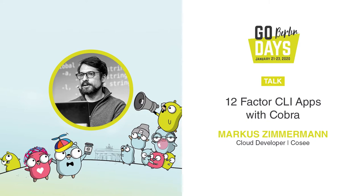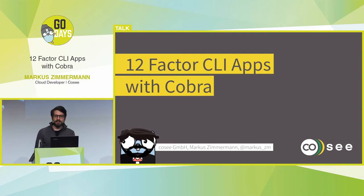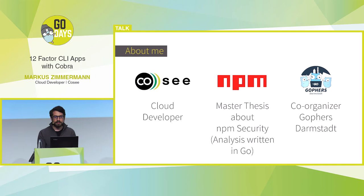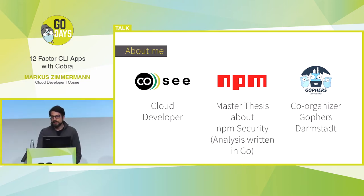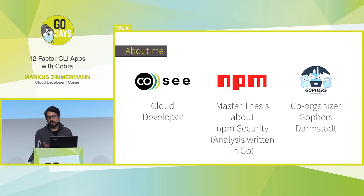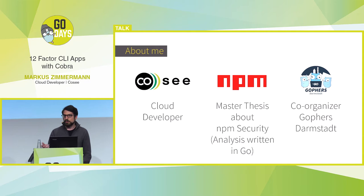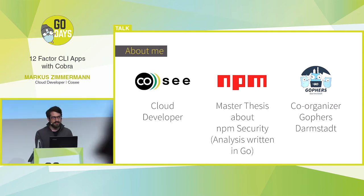Hello, hope you are not too tired after lunch. This talk is about writing good CLI apps with Go and the Cobra library, looking at 12 factors similar to the 12 factors of Heroku. A little bit about me: I'm a cloud developer at Cozy for about two years, where we do product development and cloud consulting. We wrote some backend services in Go, and last year I did my master's thesis about supply chain attacks in NPM, where I wrote the whole analysis pipeline in Go with Cobra. I'm also co-organizer of the Go Freiburg meetup.